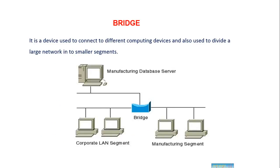A bridge is a device that's used to connect different computing devices and also used to divide a large network into smaller segments. Basically, bridge is used to divide a large network because in case of a large network, it's very difficult to maintain and manage. But if the same network is divided into multiple smaller segments, then it's very easy to manage or maintain.